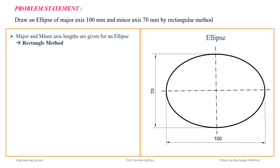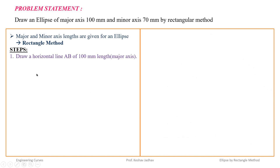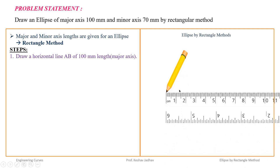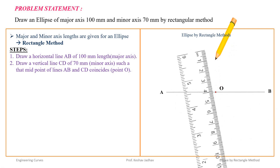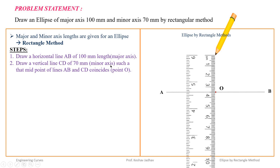Let us draw step by step. First, draw horizontal line AB of 100 mm length, which is equal to the major axis length. Then locate the midpoint of AB and draw vertical line CD equal to 70 mm, which is the minor axis length. The total length of the minor axis is 70 mm, so we draw 35 mm above and 35 mm below the horizontal line.